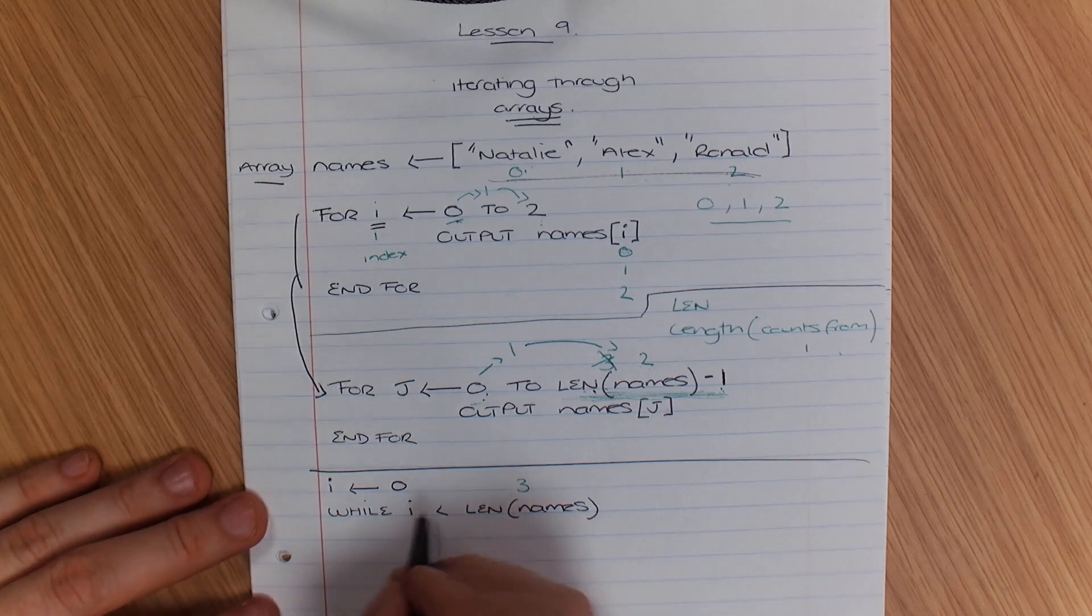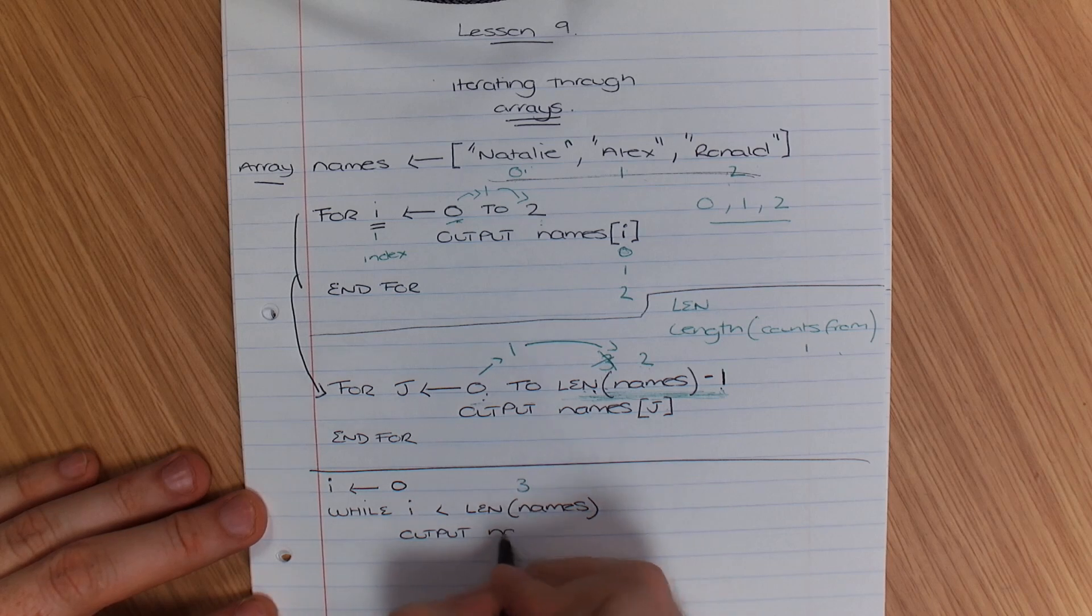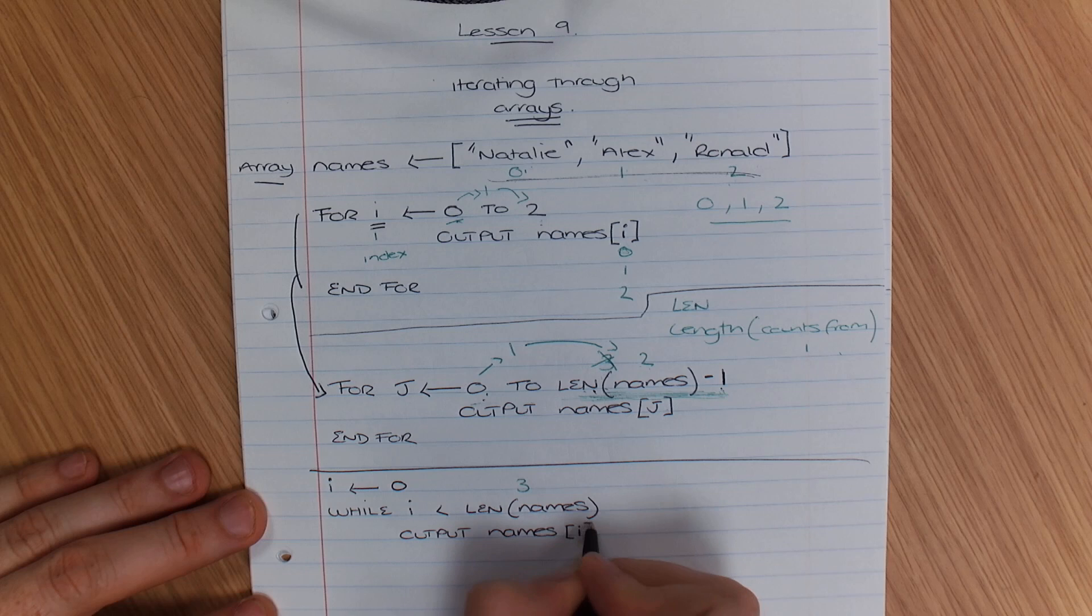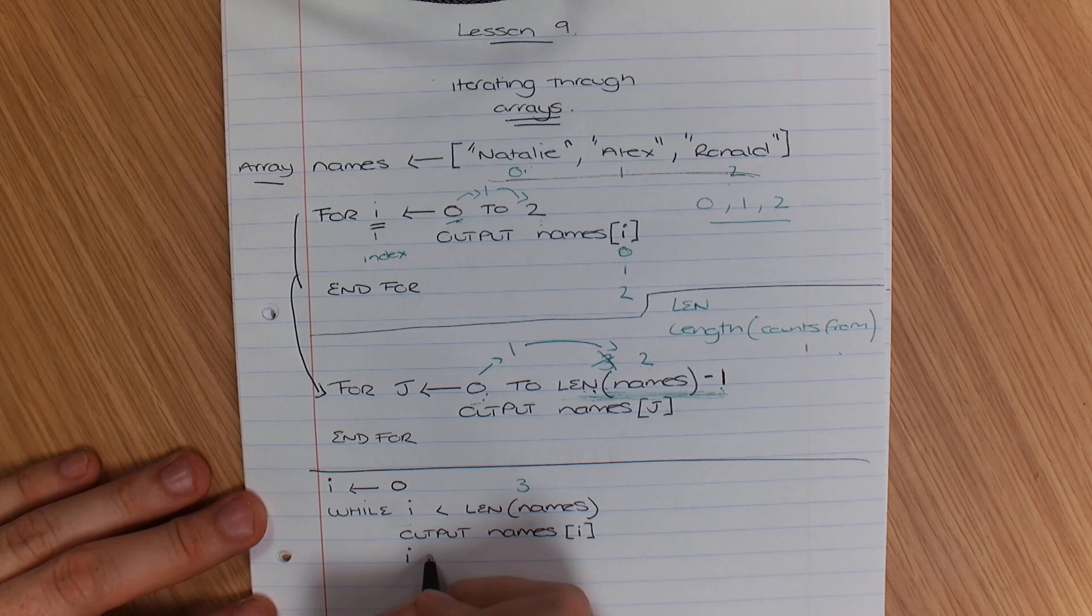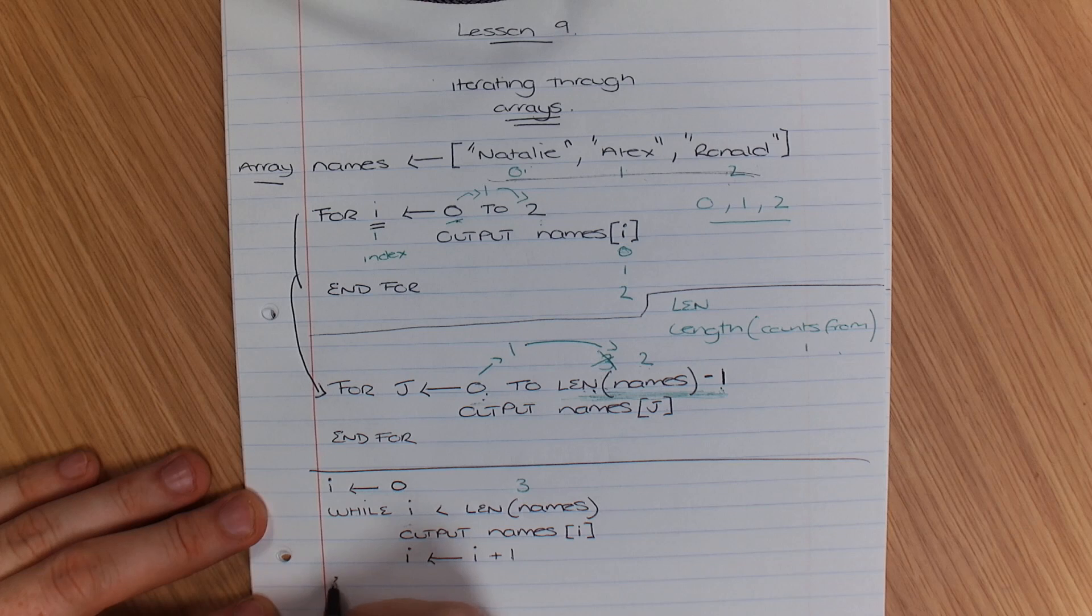We're going to output names i. But then we're going to increase the value of i. So i is equal to i plus 1. And end while.